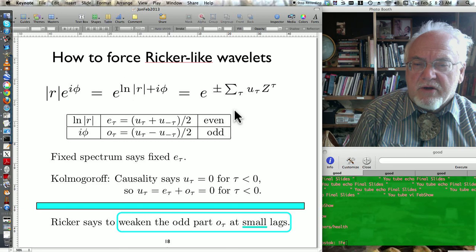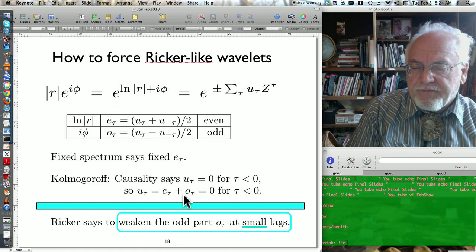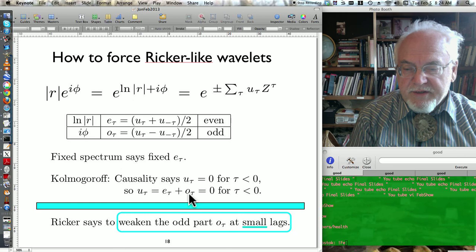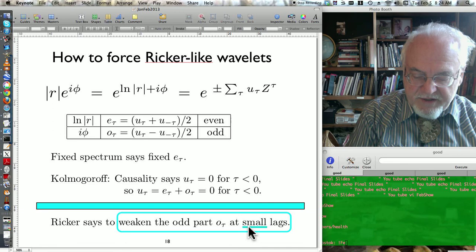The odd part, however, is where the phase comes from. Mr. Kolmogorov says, why don't you take this U function to be causal, make it vanish before t equals zero. And so if you look before t equals zero, the even part and the odd part have to cancel each other. And that defines for you the odd part. We like it, we used it a lot, and we continue to use it. But Mr. Ricker says, let's start from where you left off, and let's change it a little bit. Let's change the phase a little bit. At small lags, let's just suppress that phase a little bit, let's just damp it down a little bit.